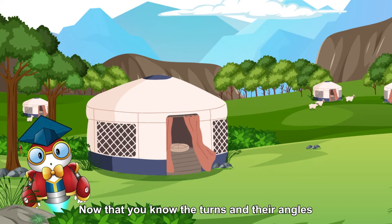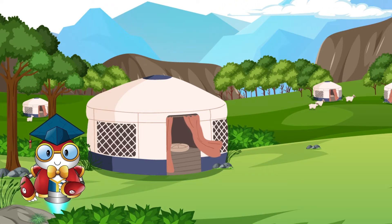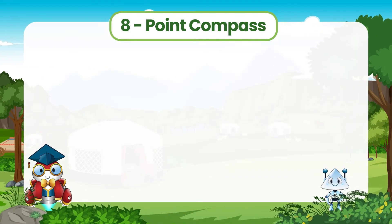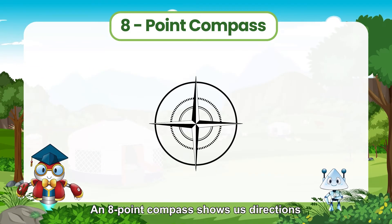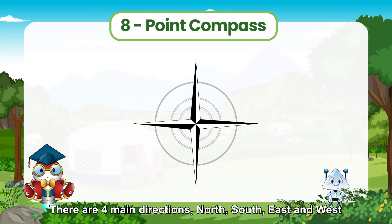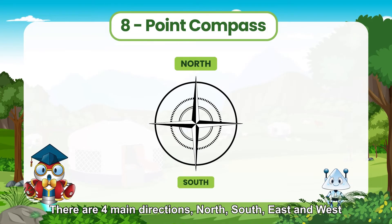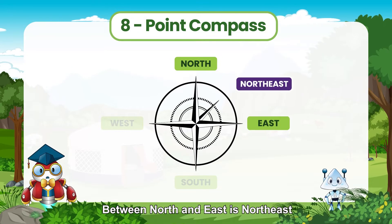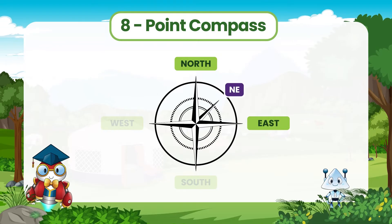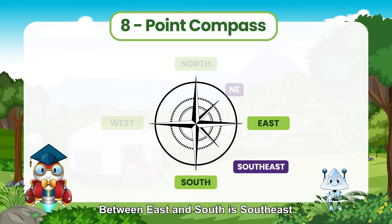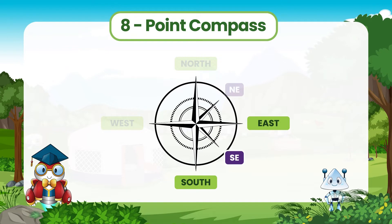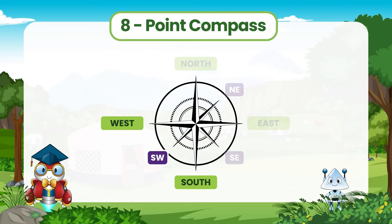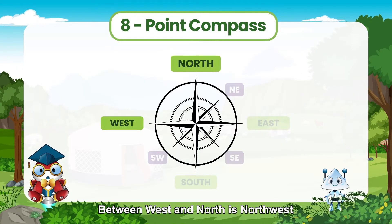Now that you know the turns and their angles, let's move on to the eight-point compass. An eight-point compass shows us directions. There are four main directions: north, south, east, and west. Between north and east is northeast. Between east and south is southeast. Between south and west is southwest. Between west and north is northwest.